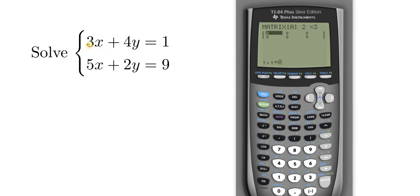Now just enter the coefficients. So three, then hit enter, four, hit enter, one, hit enter. So just go straight across that first row: three, four, one, that first equation.